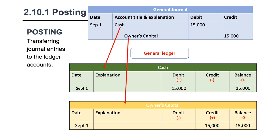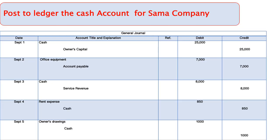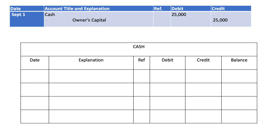Now let's practice. In this slide we take the example we already started in chapter 2, part 1. We have the journal entries and now we need to post the cash account to the ledger. Before we start, we need to prepare our ledger. Cash is an asset, so it has a debit balance — it increases with debit and decreases with credit. Since no opening balance was given, we add zero.